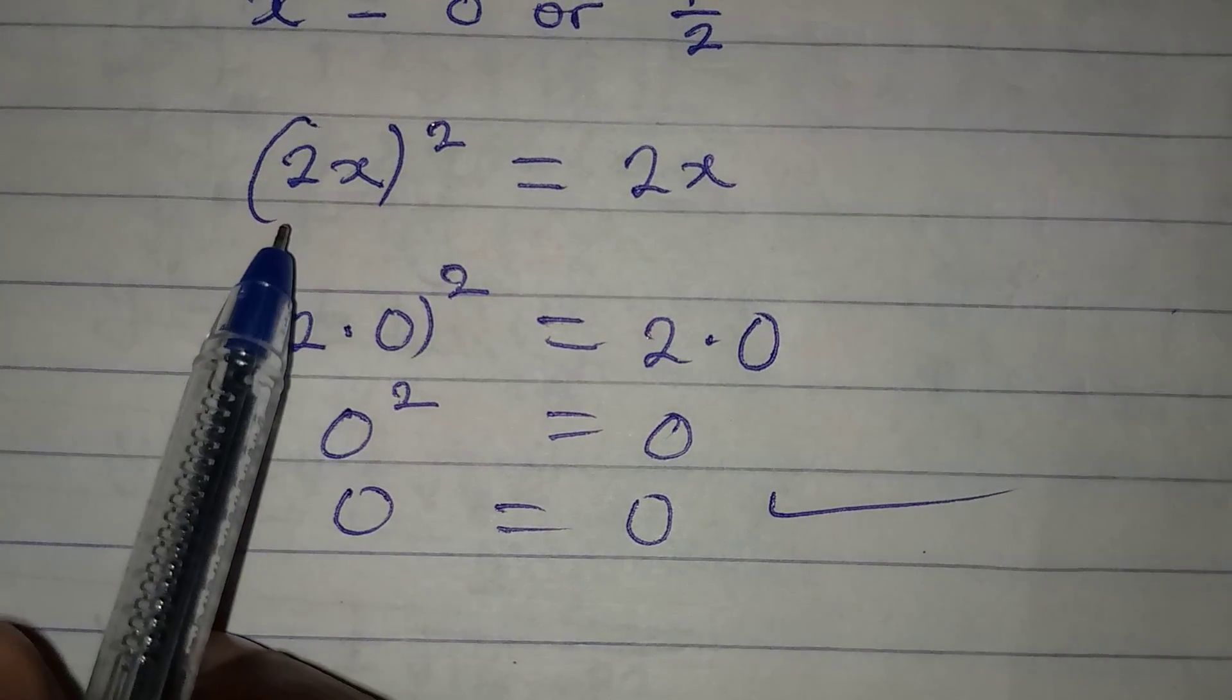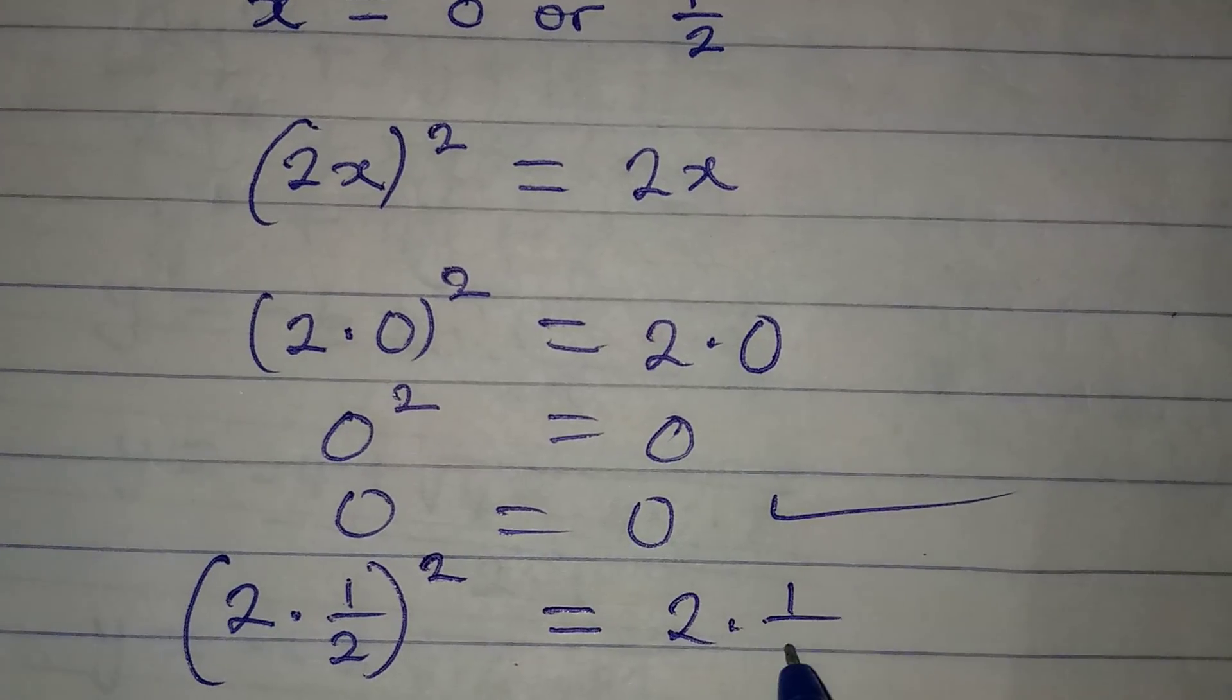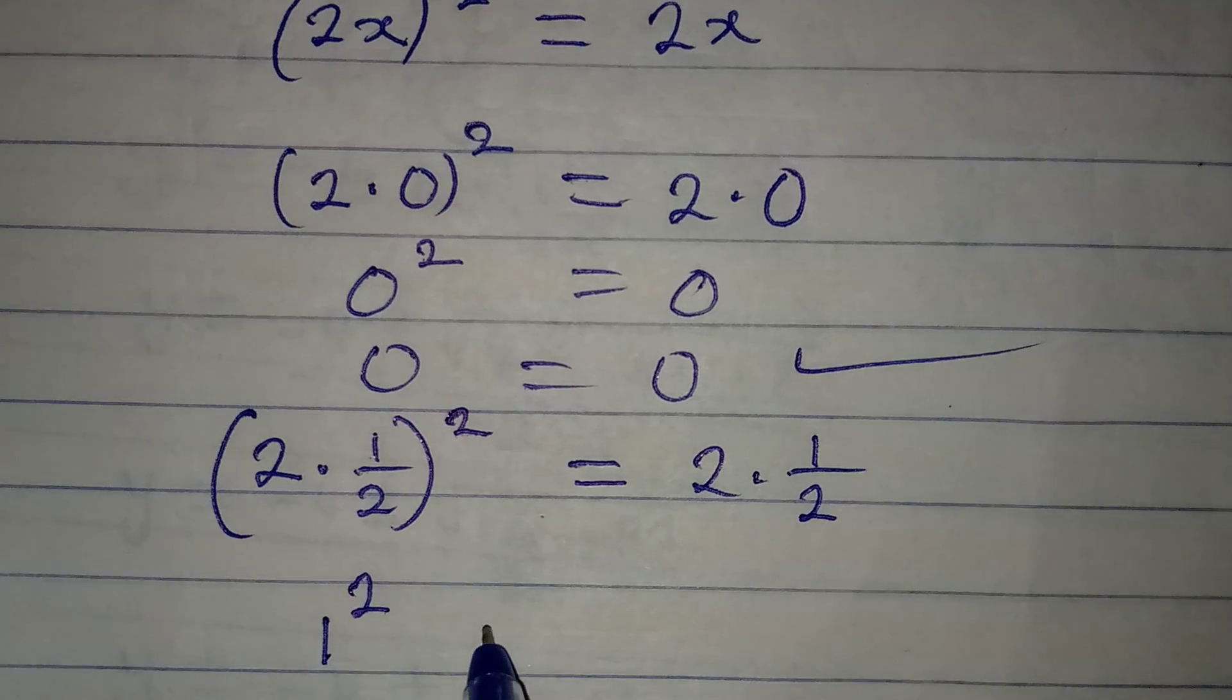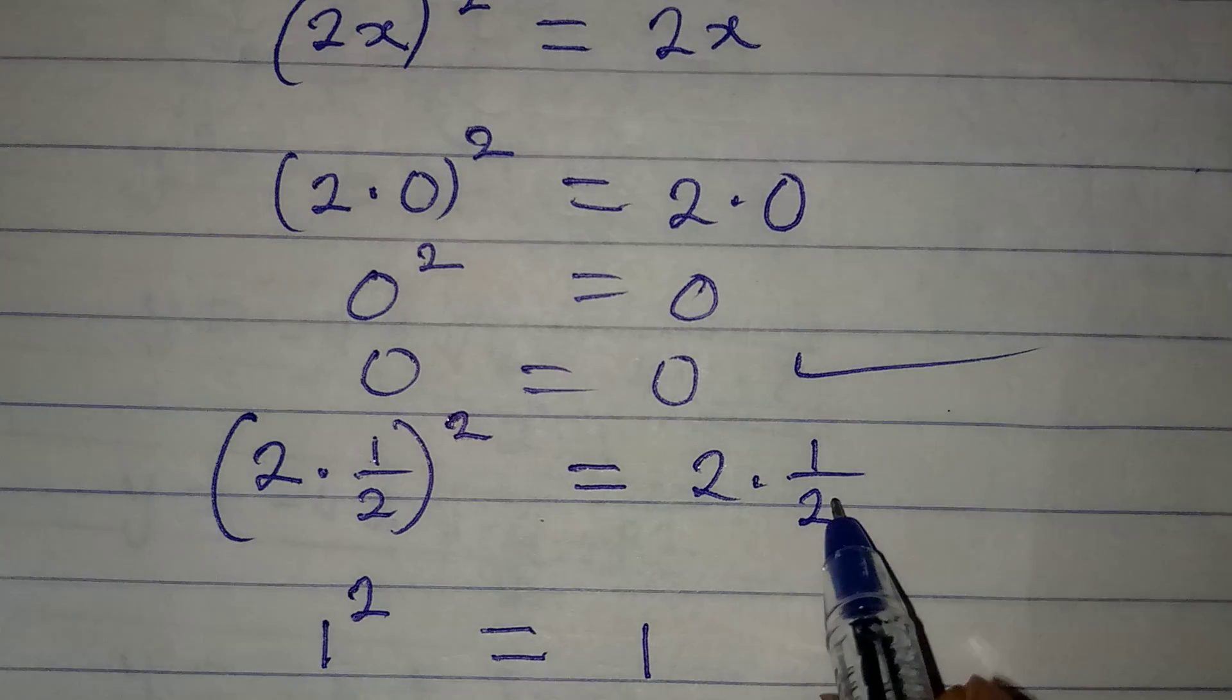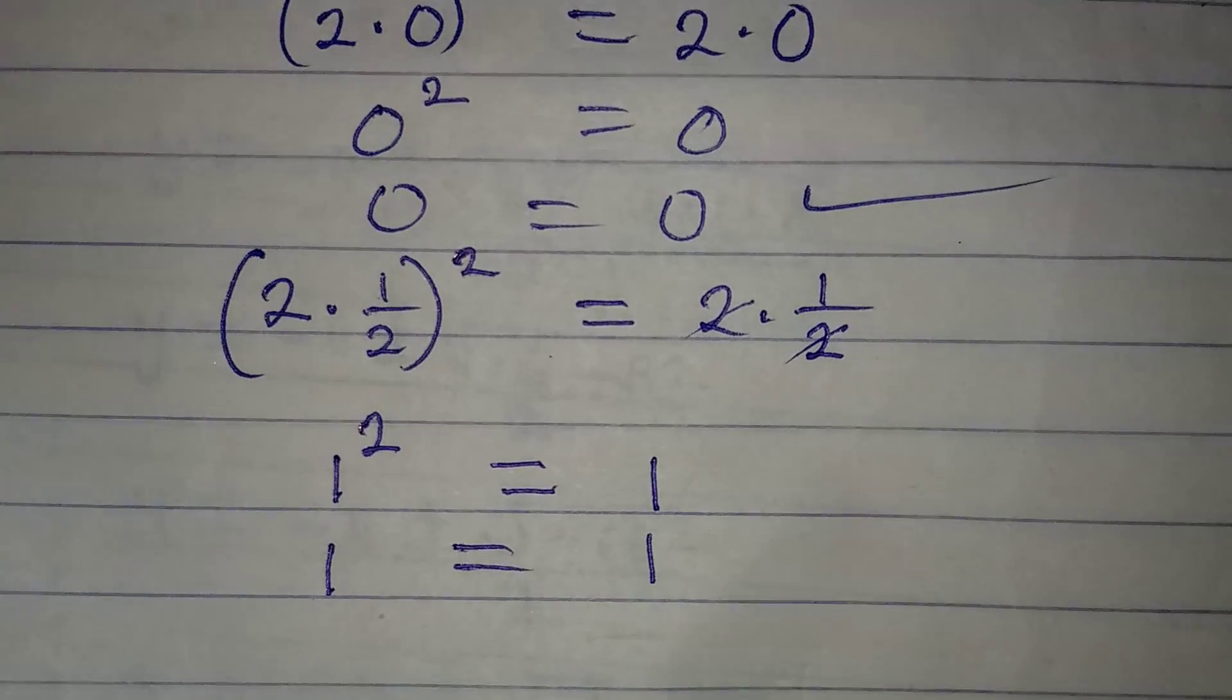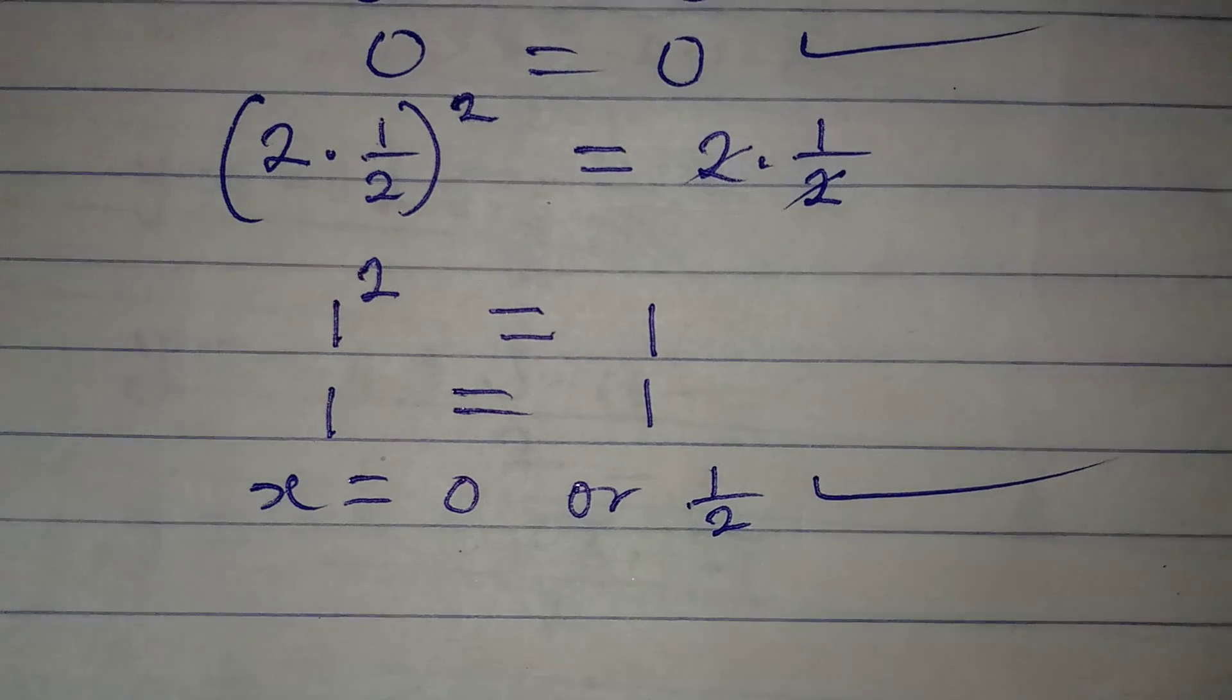If I'm having x to be 1/2, then I have (2·1/2)² equal to 2·1/2. Two times 1/2 will give 1, so we have 1². On this side, 2 times 1/2 will still give 1 because 2 cancels and we have 1. One squared is 1, right? So this means that x equal to 0 or 1/2 satisfies the equation.